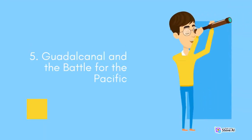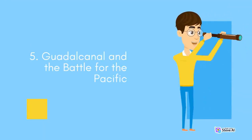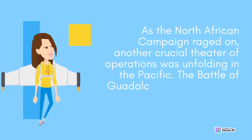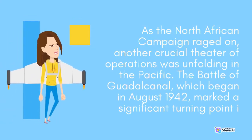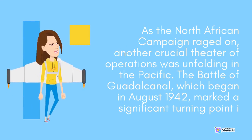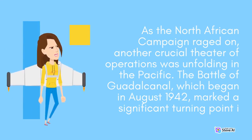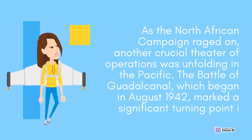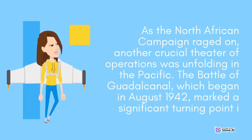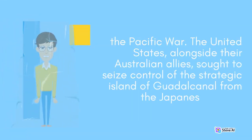As the North African campaign raged on, another crucial theater of operations was unfolding in the Pacific. The Battle of Guadalcanal, which began in August 1942, marked a significant turning point in the Pacific War. The United States, alongside their Australian allies, sought to seize control of the strategic island of Guadalcanal from the Japanese forces.